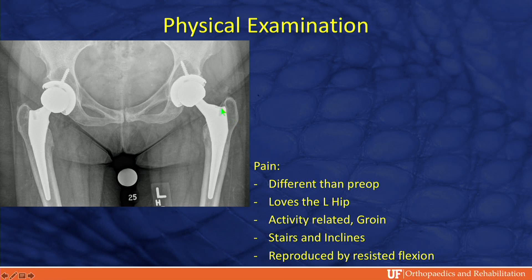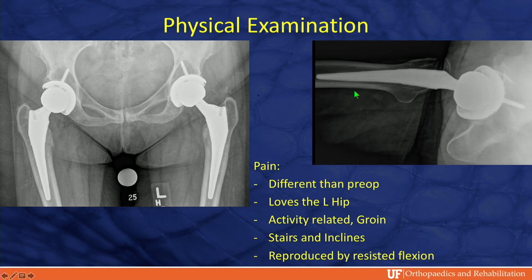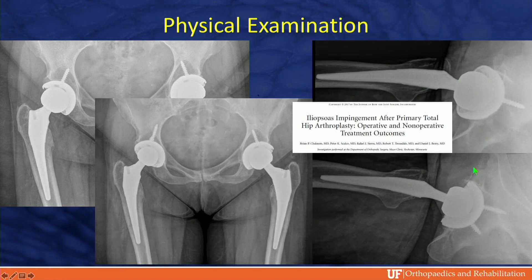This patient loves her left hip but has pain in the right hip that is different from before surgery — activity-related groin pain, worse with stairs and inclines. When you resist hip flexion, she has severe pain. Classic iliopsoas impingement from a prominent socket. Temporal relief with injection, fixed by revision of the socket, as described in a classic article from the Mayo Clinic.